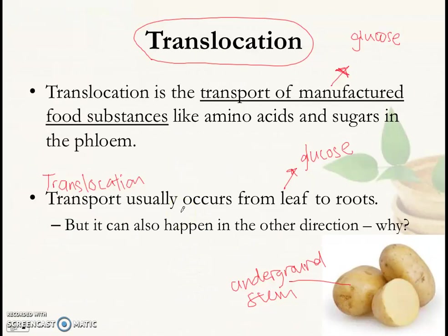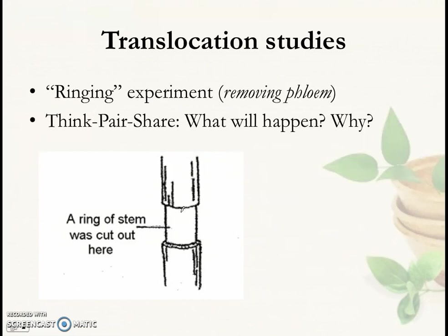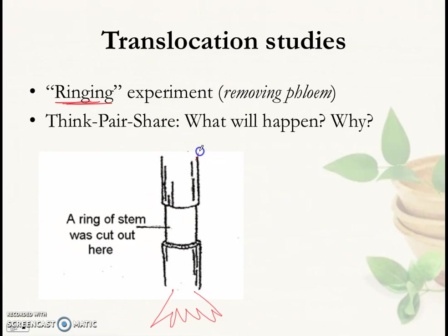We've already looked at aphid stylectomy as evidence for translocation. Now we'll look at a second experiment: the ringing experiment. In a plant where leaves are at the top and roots below, a ring of stem is cut out. Since the phloem is on the outer part of the stem, ringing removes the phloem from that section. The leaf is producing glucose through photosynthesis, which is converted into sucrose and transported in the phloem.